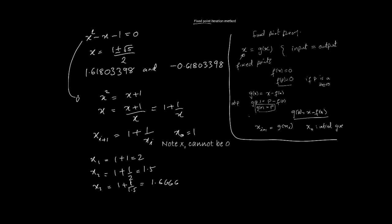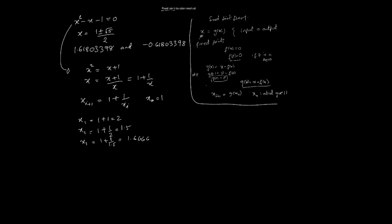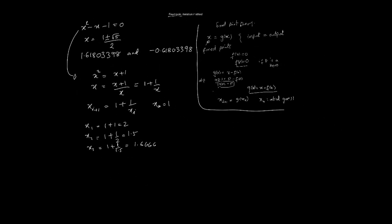Interesting to note is that's the only root it will converge to. In order to find the other root, you will have to set up another fixed point iteration. A different iteration will work for that, and I'll show you what can work and what doesn't work.